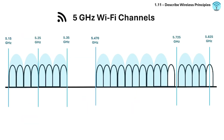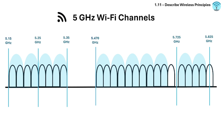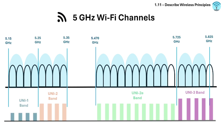The 5 GHz band has many more channels and is less crowded. These channels are wider apart, which means more non-overlapping options. The 5 GHz band is split into 24 individual channels with a bandwidth of 20 MHz.